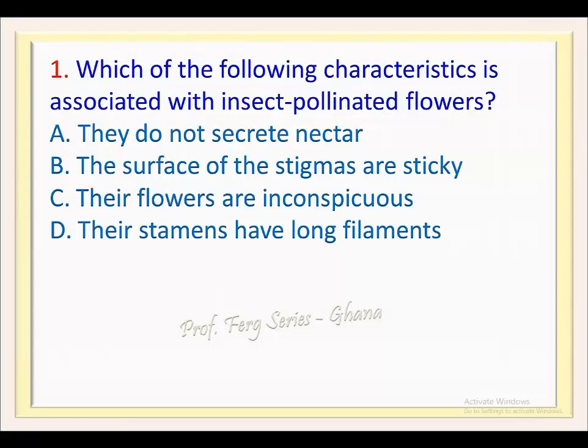Question 1. Which of the following characteristics is associated with insect-pollinated flowers? a. They do not secrete nectar. b. The surface of the stigmas are sticky. c. Their flowers are inconspicuous. d. Their stamens have long filaments.